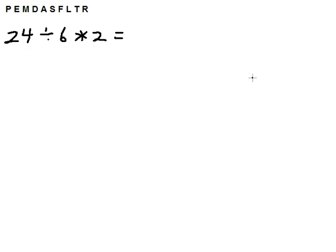Let's do this problem now. 24 divided by 6 times 2. We have division and multiplication. What do we do first?